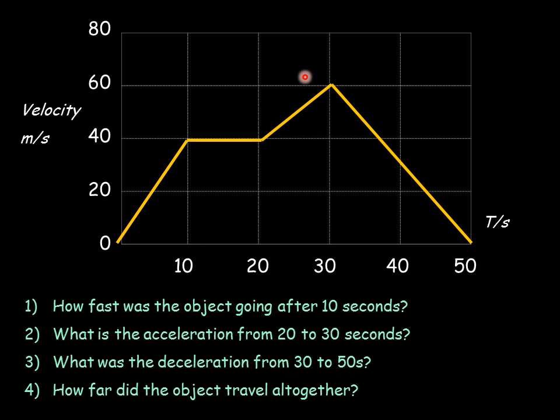What is the acceleration from 30 to 50? Change of speed goes from 60 to 0, so it's 60 meters per second change in a time of 20. So 60 divided by 20 would be 3 meters per second squared. And it might be a minus sign to show it's a deceleration. How far did the object travel altogether? You'd have to do it by working out the area under the graph. That would only appear on a higher paper.